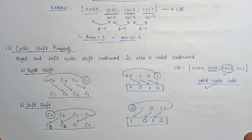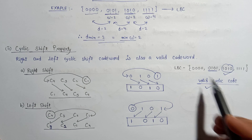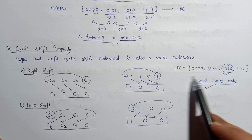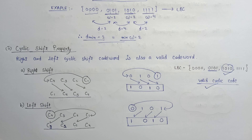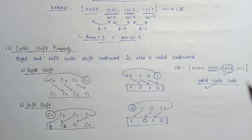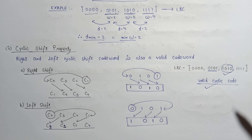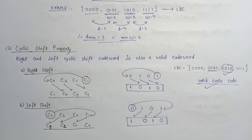This is how we can easily identify whether any linear block code is a valid cyclic code or not — by using the linearity property and the cyclic shift property. If you like this content, please subscribe to the channel and hit the like button. Thank you.